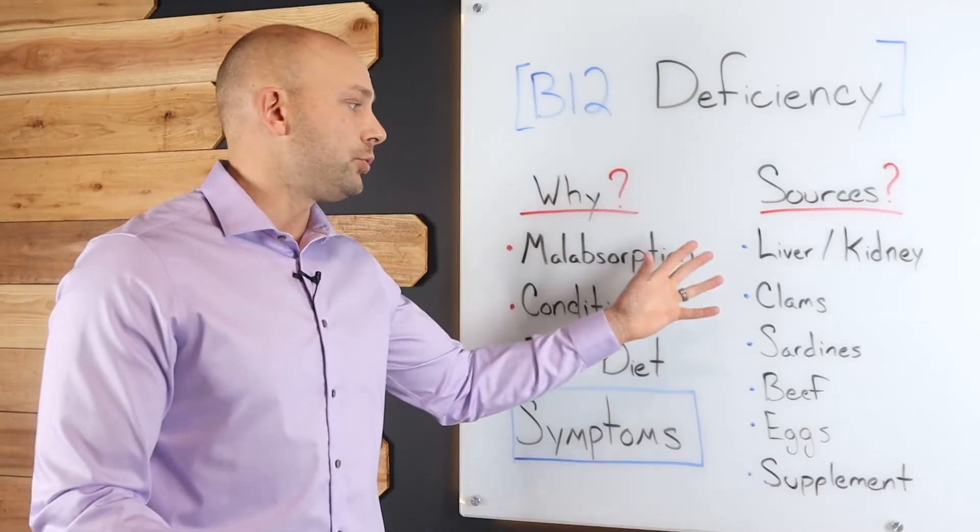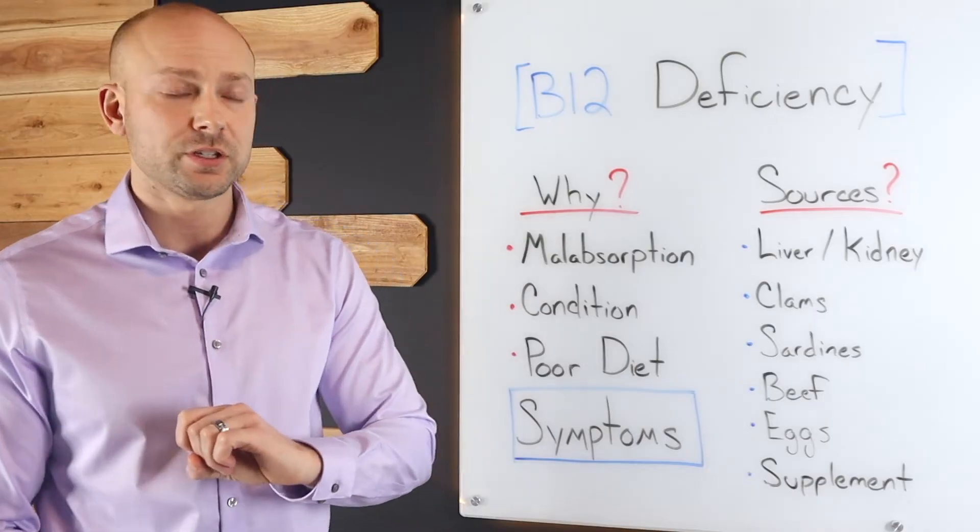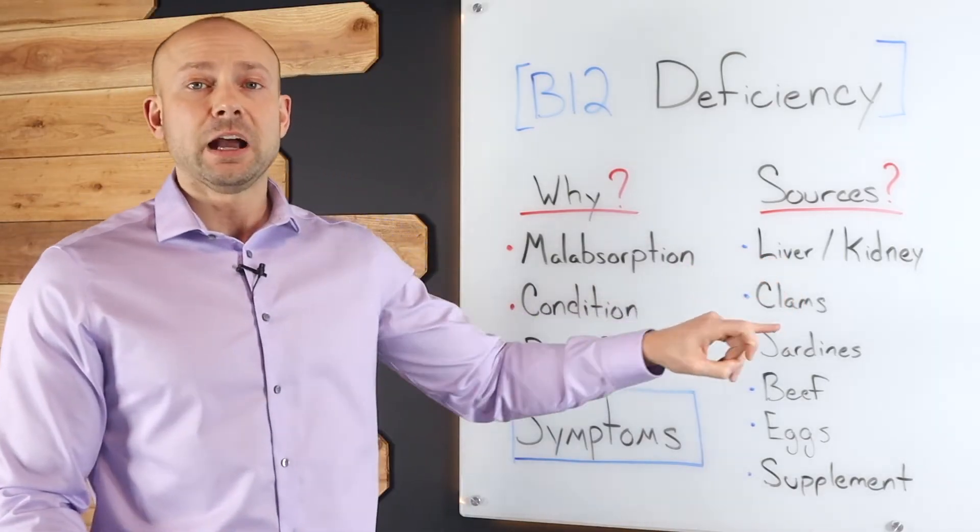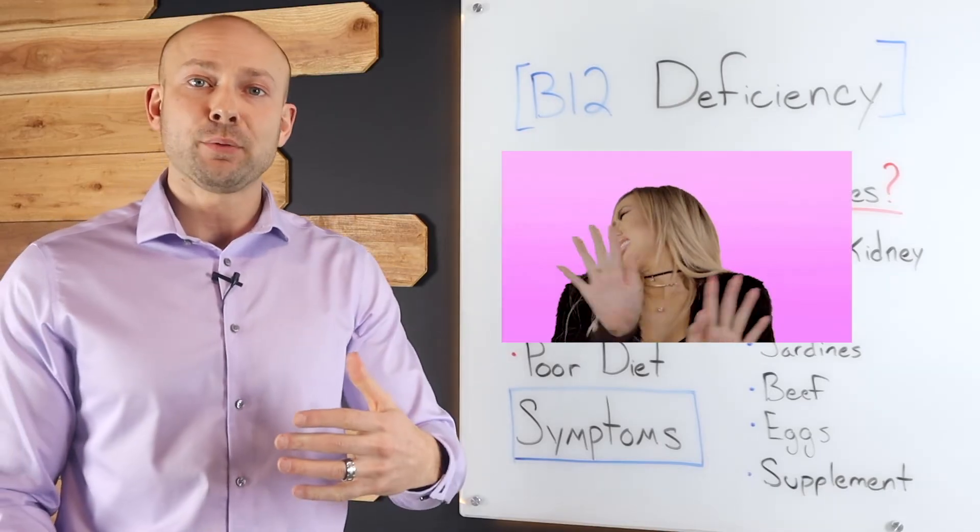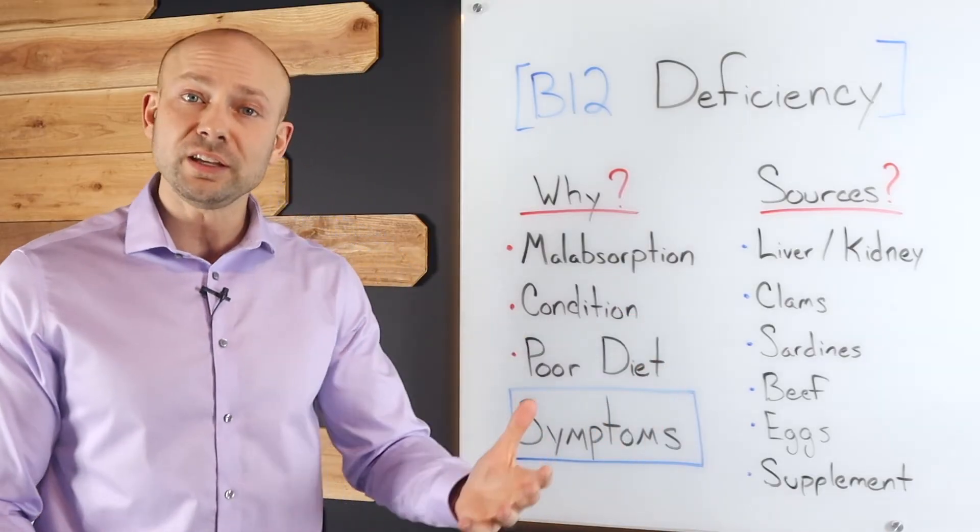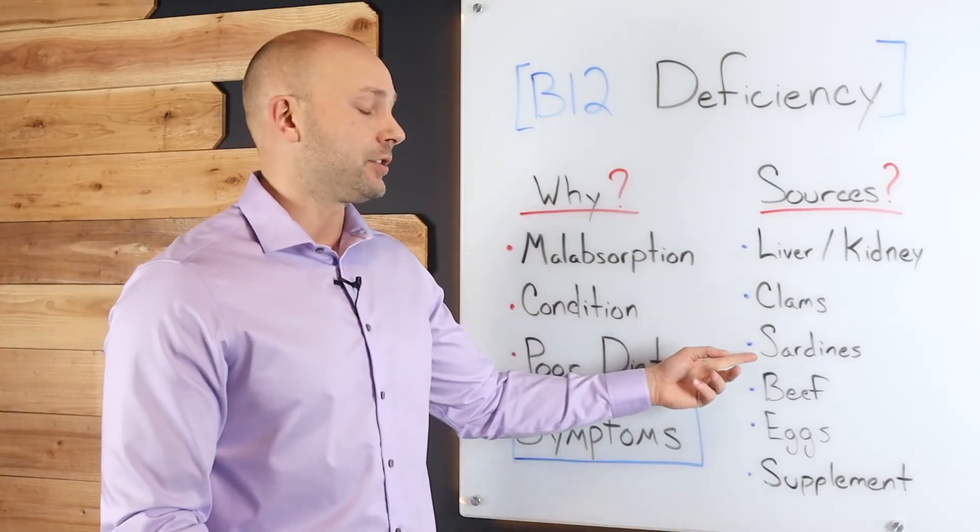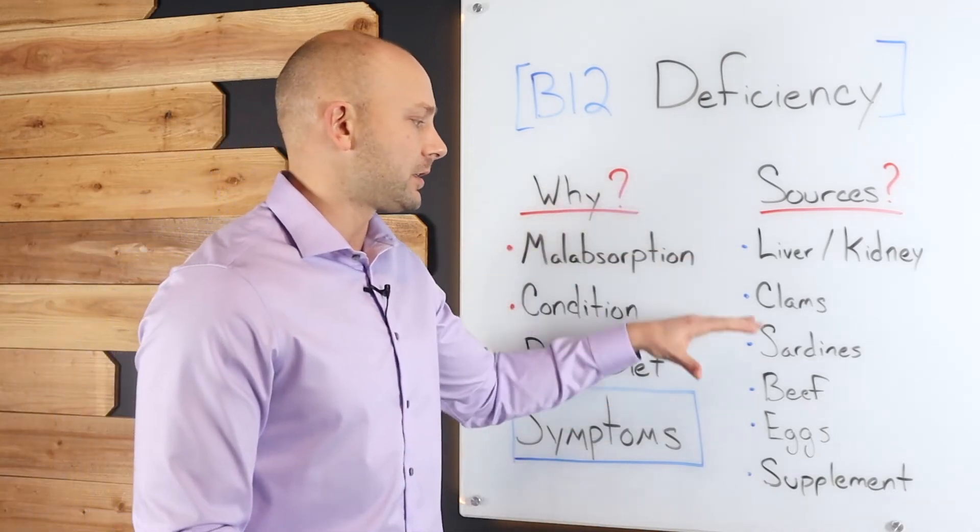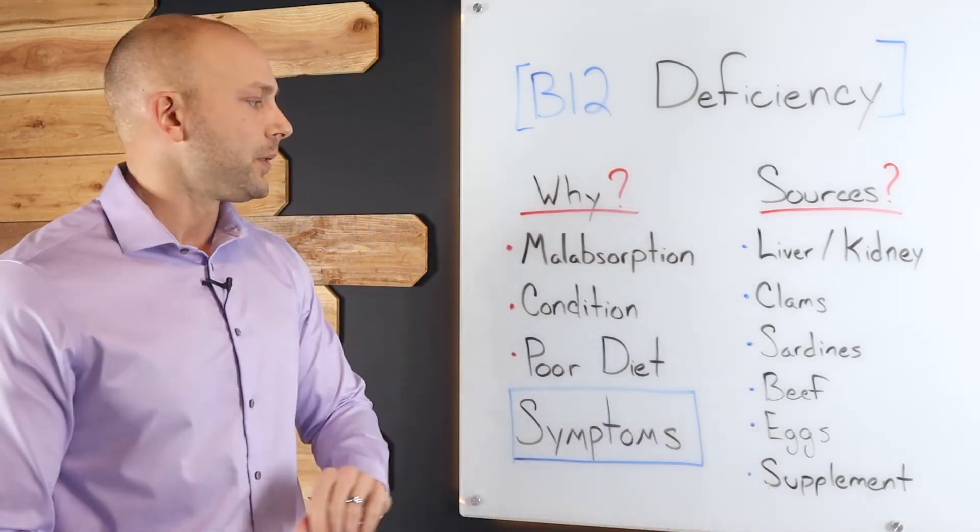Let's talk about how you get B12 back in your system. First on our list here is going to be liver and kidney. If you're not a liver and kidney type of person from animals and you're not into eating organ meats, then you can go to the seafood, and that's going to be clams and sardines, your next greatest source. I'm kind of just going from highest to smallest amount here.